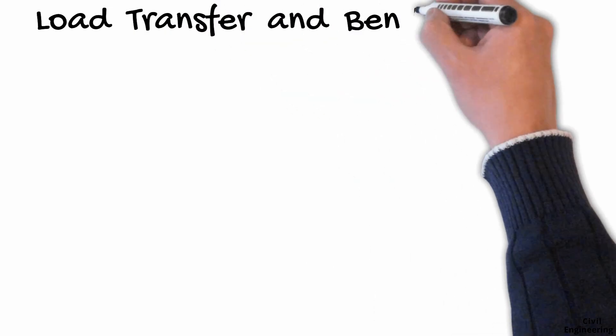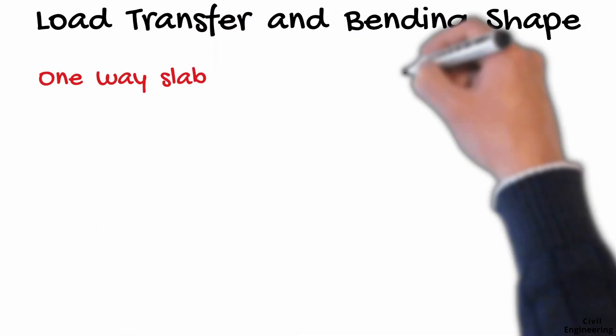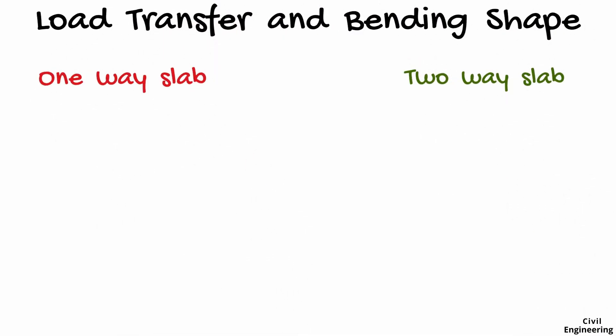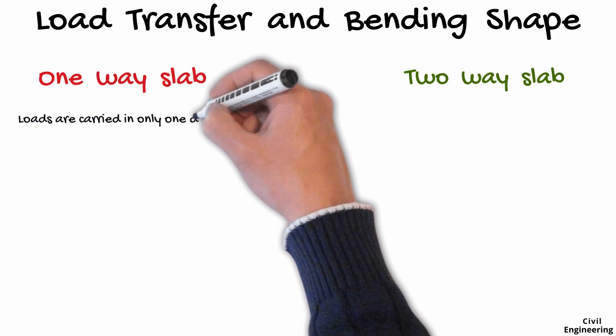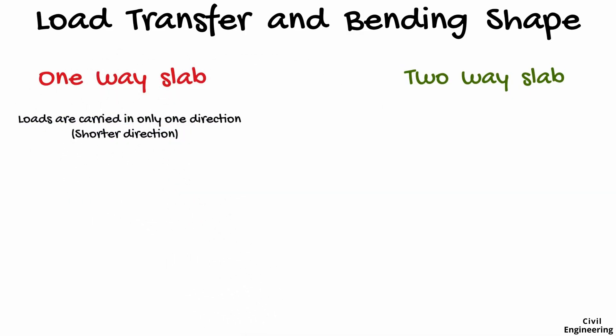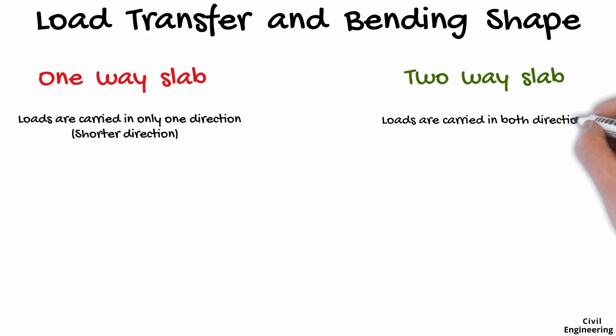Here we are going to discuss the load transfer and bending shape in one-way slab and two-way slab. In a one-way slab, the loads are carried in only one direction — that is the shorter direction. But in a two-way slab, the loads are carried in both directions, meaning they are carried by all four supports.